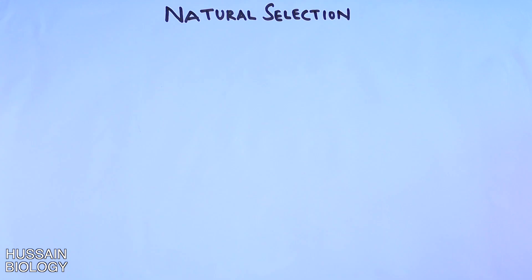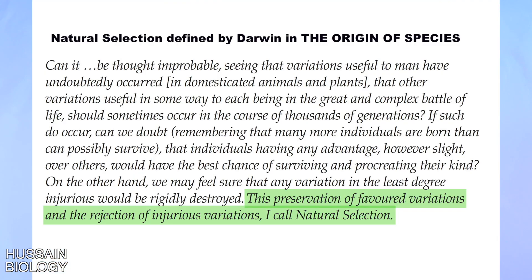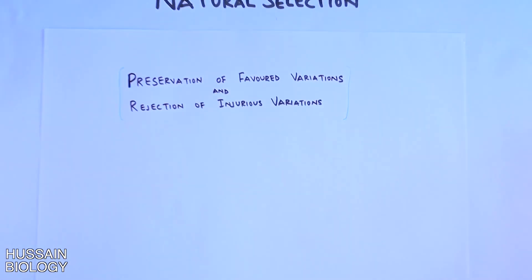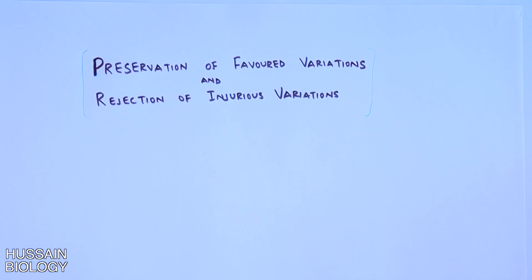In this video we will be discussing natural selection. Going by what Darwin has said, the preservation of favored variations and the rejection of injurious variations is what Darwin called natural selection. This means variations within the population which favor the species for its survival and reproduction are always preserved over time, whereas variations which are negative for survival are always rejected. In a nutshell, beneficial variations stick within the population whereas the bad ones are subtracted from it.